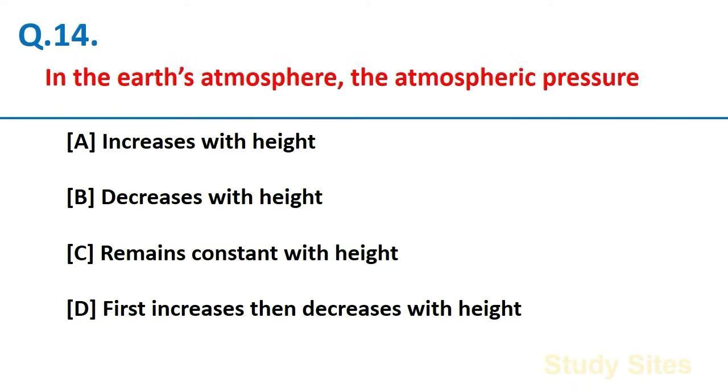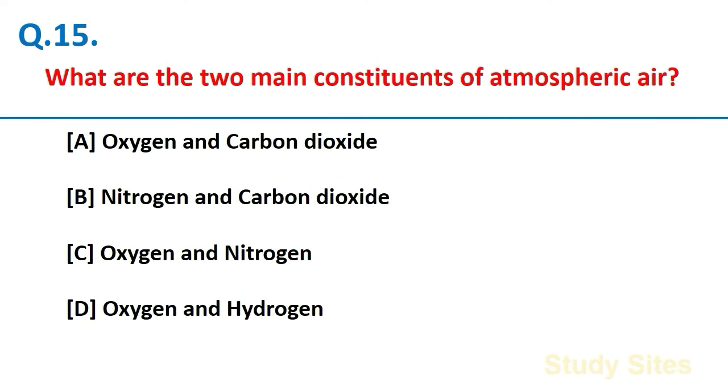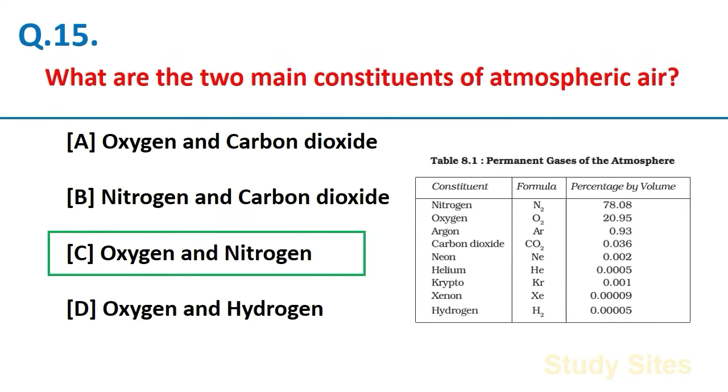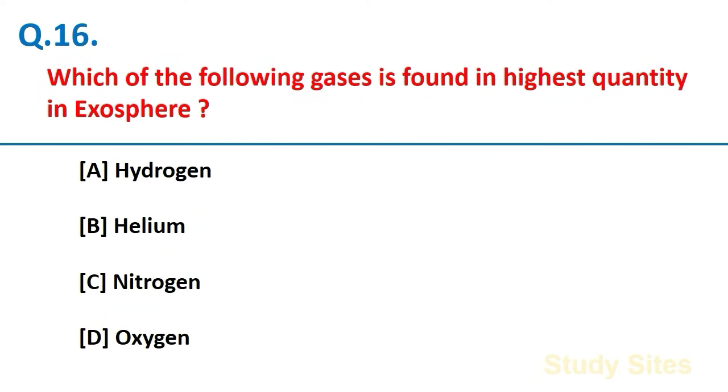In the earth atmosphere, the atmospheric pressure decreases with height. What are the two main constituents of atmospheric air? Oxygen and nitrogen. Which of the following gases is found in highest quantity in exosphere? Hydrogen.